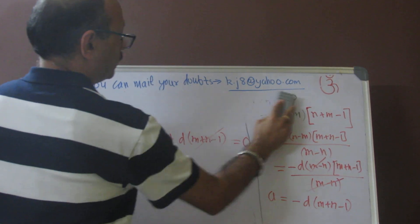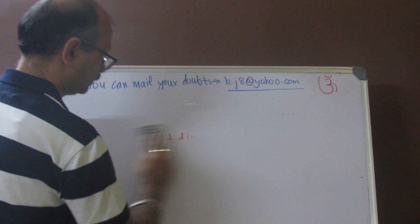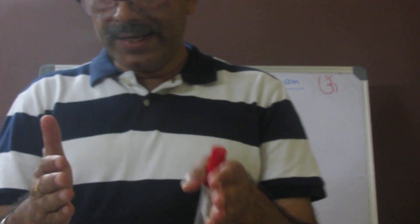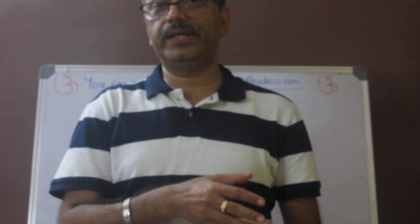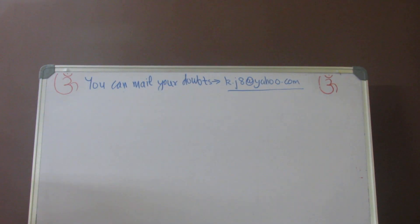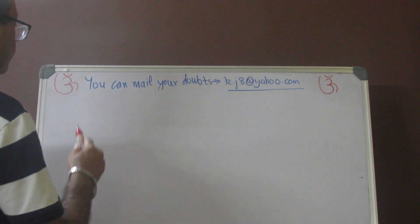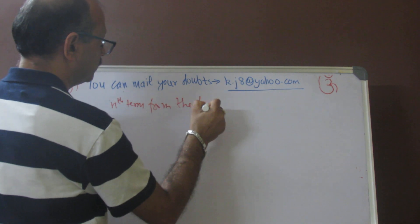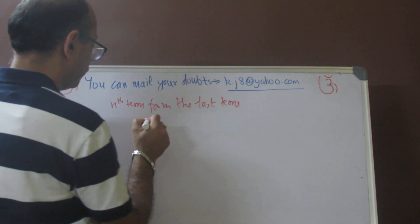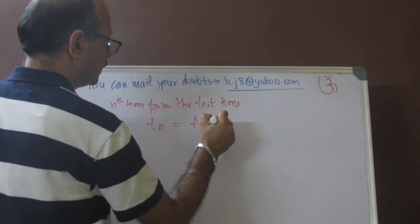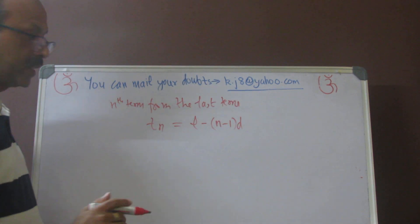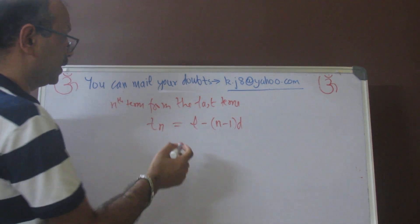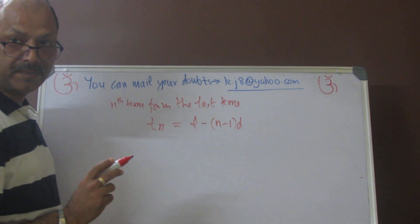Moving forward, we look at another kind of question. Sometimes the question asks us to find a term from the last. The formula for the nth term from the last term is: tn = l − (n−1)d. Our general formula for tn is a + (n−1)d, but when finding from the last, we use tn = l − (n−1)d.